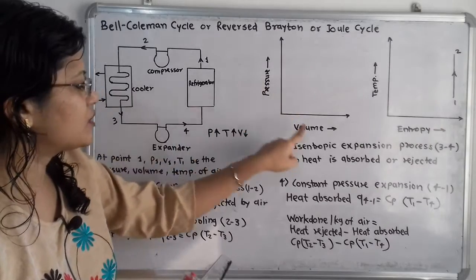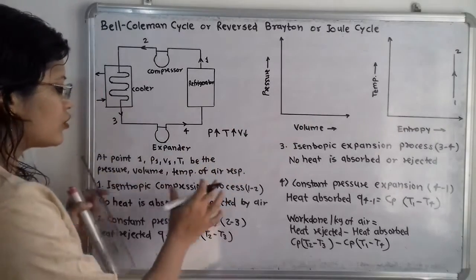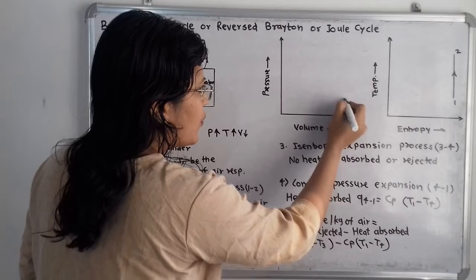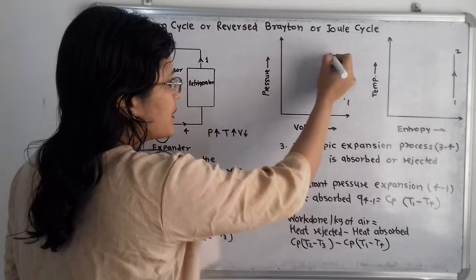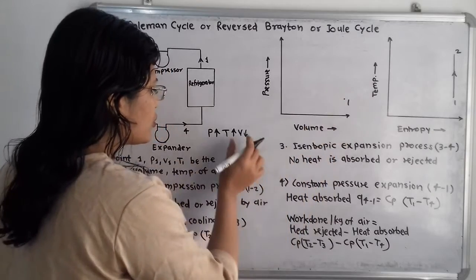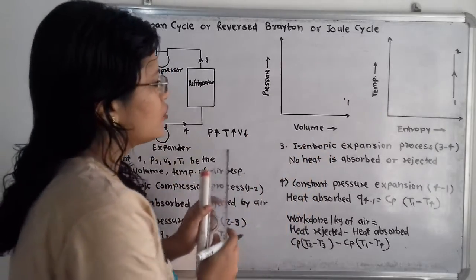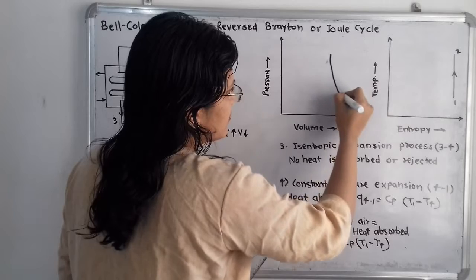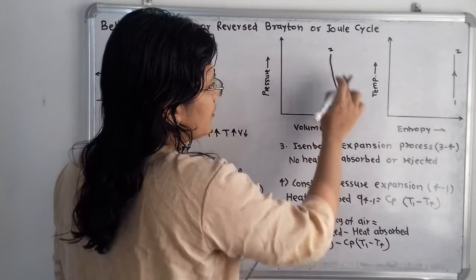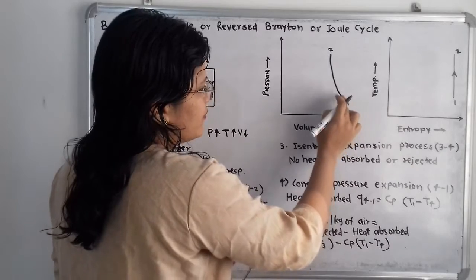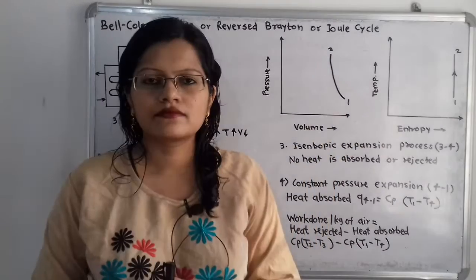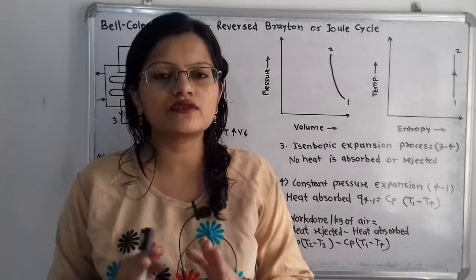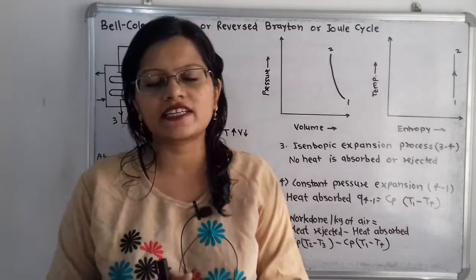Now we will show the pressure-volume diagram. Pressure increases and volume decreases. Point 1 is selected, and point 2 will have more pressure and less volume than point 1. In process 1 to 2, entropy remains constant, meaning there is no heat absorbed or rejected.